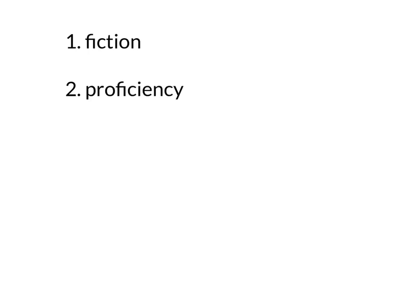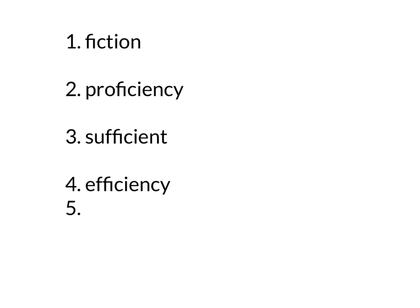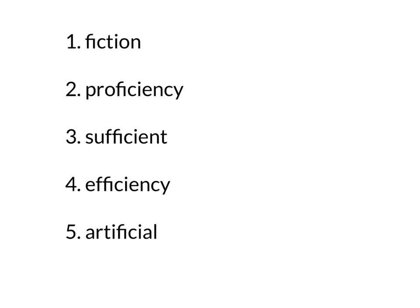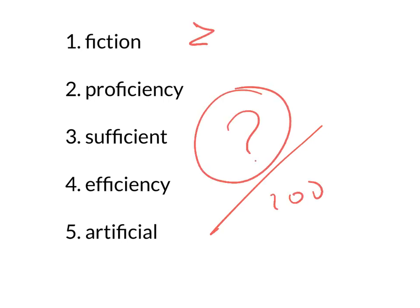这几个单字复习：fiction、sufficient、artificial、efficiency、proficiency，刚好五个。随机抽考：fiction中文什么意思、proficiency、sufficient、artificial，一格20分，看你能拿几分，这是第三阶段。